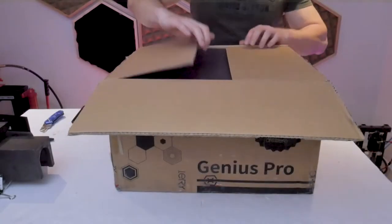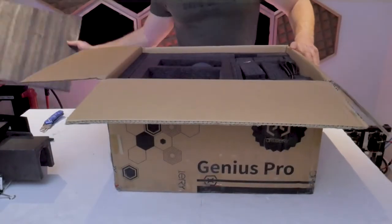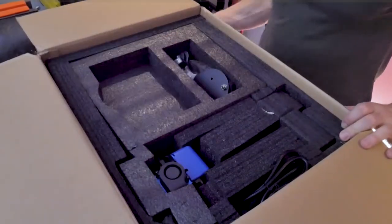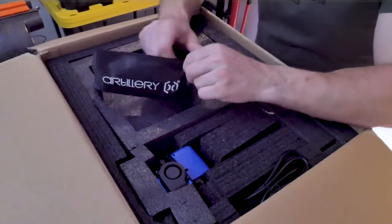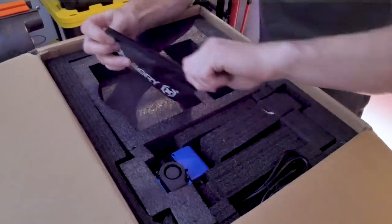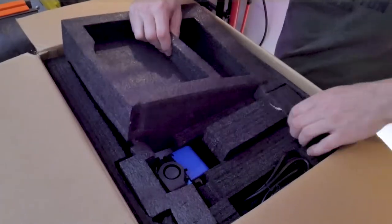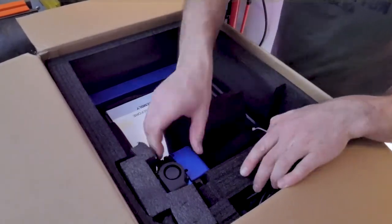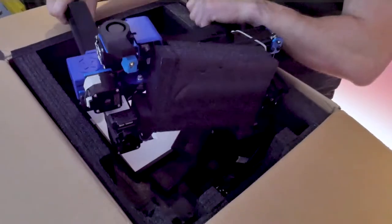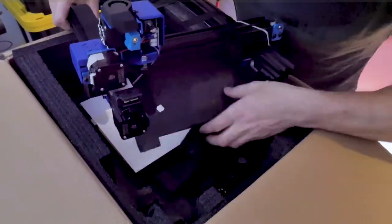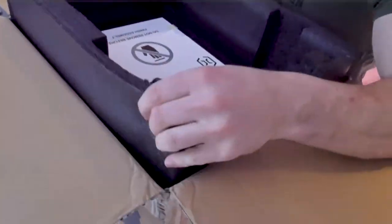We'll start here with the unboxing and the Genius Pro comes generously packed with quite a bit of foam and everything arrived in one piece. In the box you'll find instructions, things like the spool holder, a nice canvas ziploc bag here with accessories and spare parts, and under that you'll find the top x gantry system and you'll also find the base underneath of that which houses all the electronic components as well as the print bed.